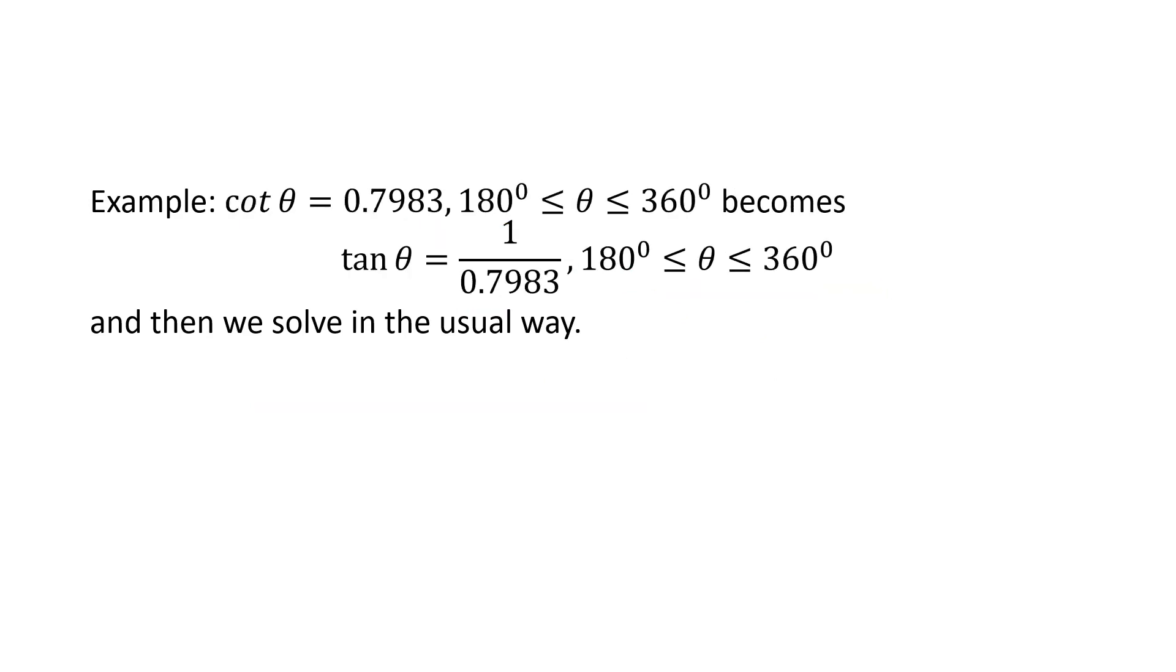And finally, if we're told that cotangent theta is 0.7983, what we do, we likely don't have a cotangent inverse button. So what we do is we use the tan inverse of the reciprocal. So the reciprocal of 0.7983 is 1.2527, approximately. So basically, what we're doing is we're approximately solving the equation tan theta equals 1.2527 over the domain given.